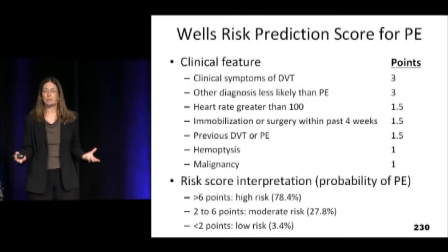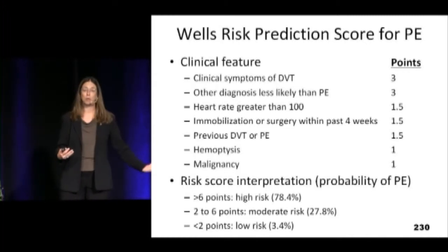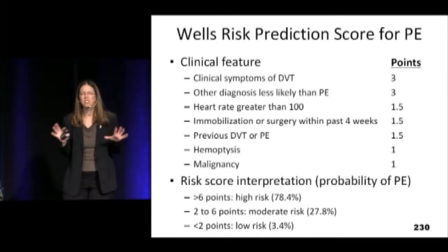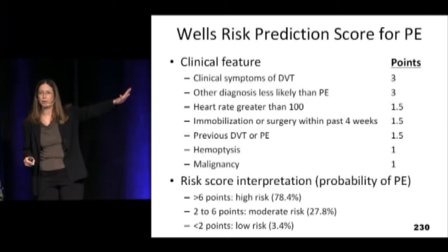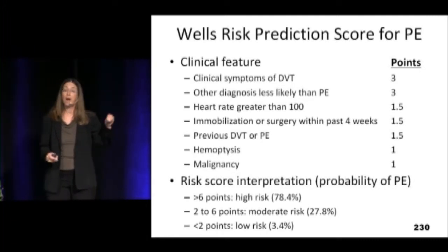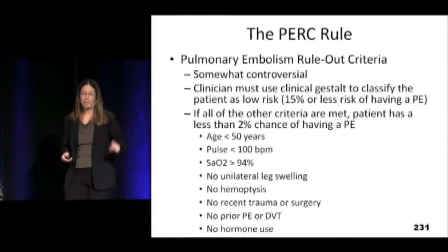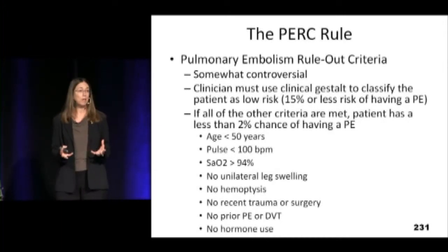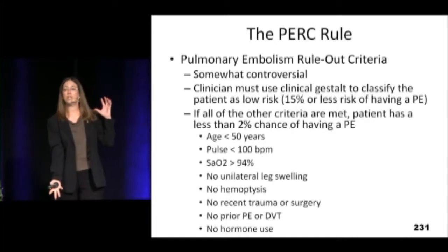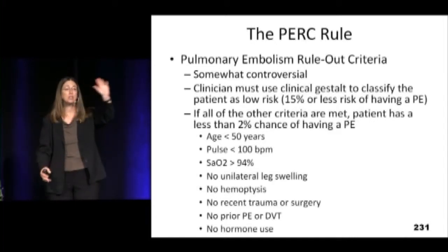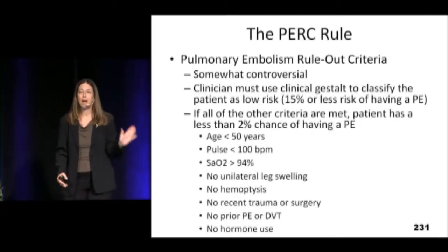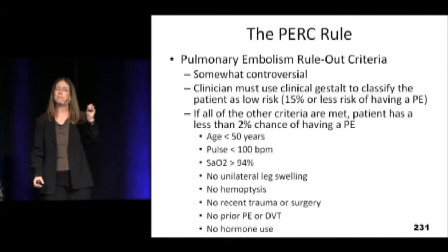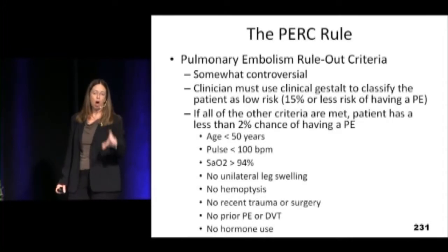If you use the Wells or your gestalt and think it's low likelihood — around 10 to 15 percent likely — you can use the PERC rule. The PERC rule gives you a set of criteria where, if the patient meets all eight, you don't even need to order a D-dimer. Nothing. You thought about it, they fall into the slightly worried category, you apply the PERC rule, and you're done. Remember, if they hit all eight criteria — has to be all eight — you're done.